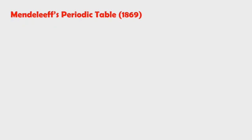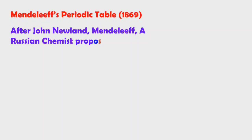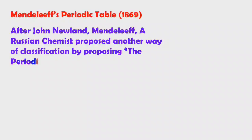In 1869, after John Newlands, Mendeleev, a Russian chemist, proposed another way of classification by proposing the periodic law.